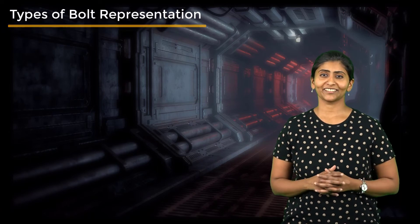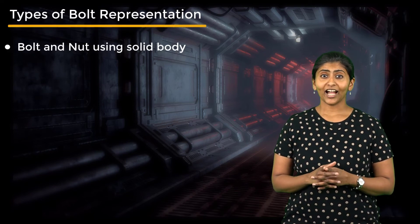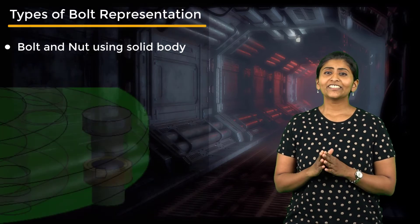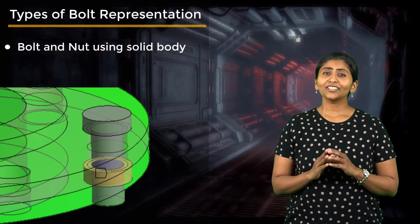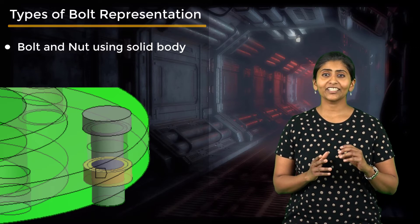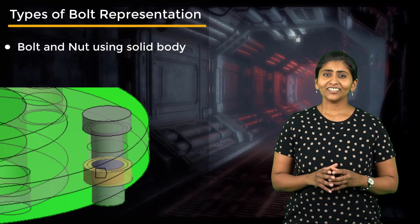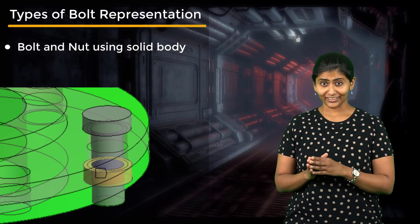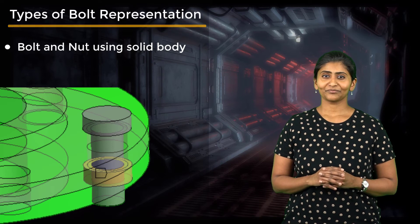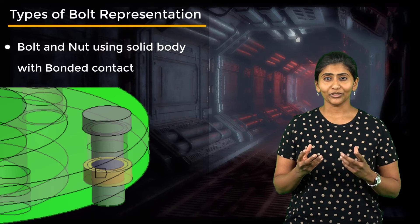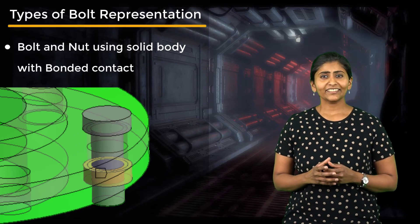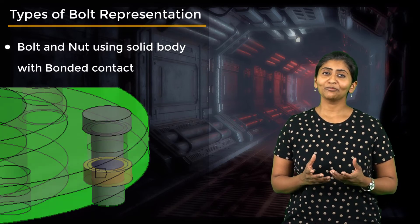Now that we have looked at the different ways in which a bolt can be simplified, let's see the actual finite element modeling in practice. The first method is modeling the bolt as a solid body with its threaded portion being replaced with a cylinder and using solid elements to discretize the bolt. Replacing the threaded portion with a cylinder reduces the node count. Bonded contact is used between the nut and the bolt. Since linear contact is used, solution time reduces.